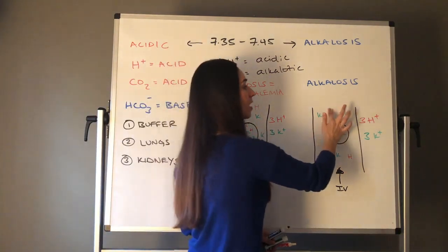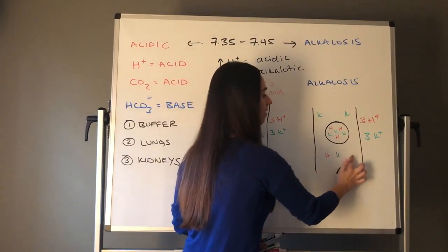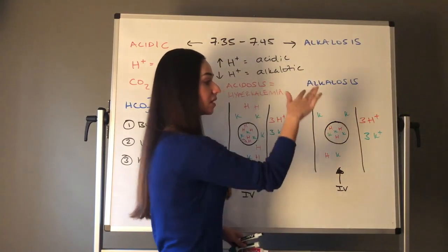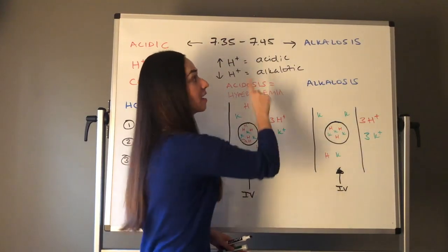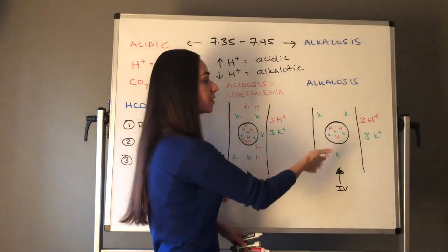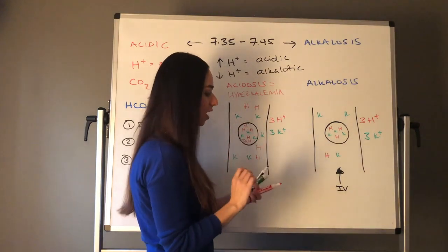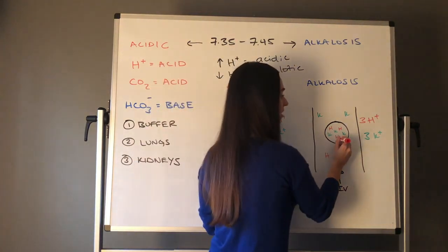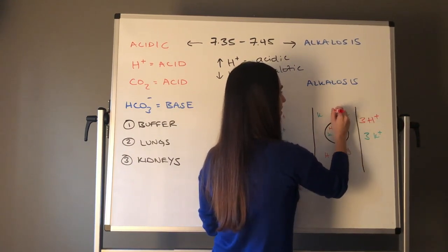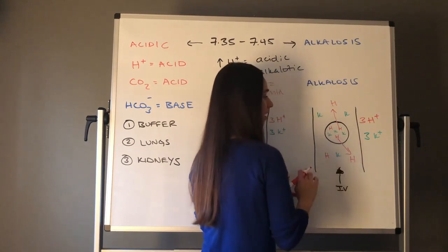Remember, hydrogen ion is acid. I'm vomiting, I lose my acid. Look how little acid you have in your blood now. The lower the acid is, the more alkalotic or basic your pH is going to go. So in this situation, my pH is going to increase.